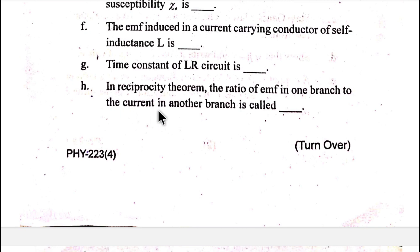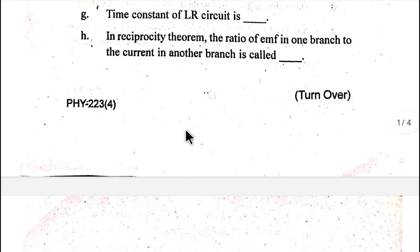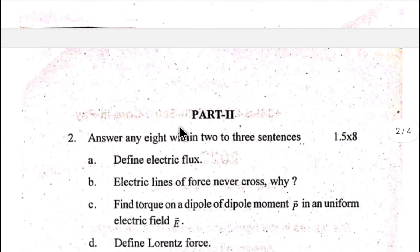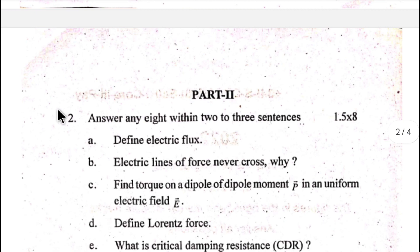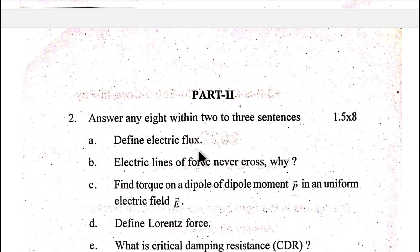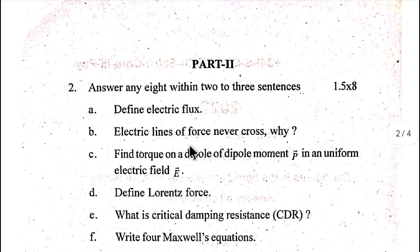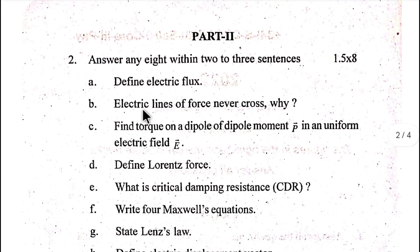The time constant of an LR circuit is dash. In the reciprocity theorem, the ratio of EMF in one branch to the current in another branch is called dash.